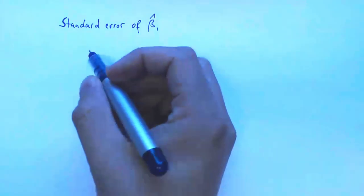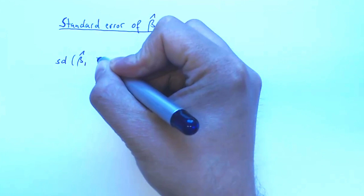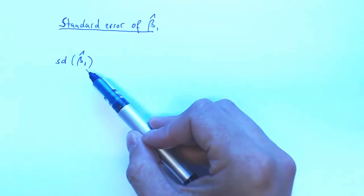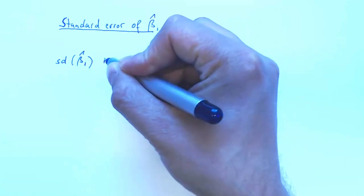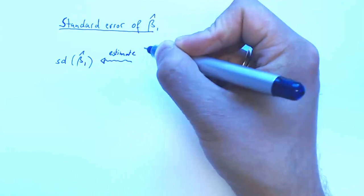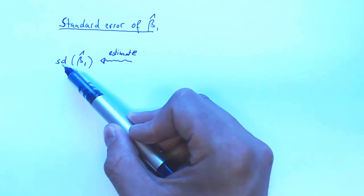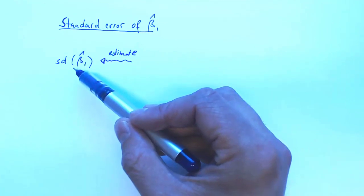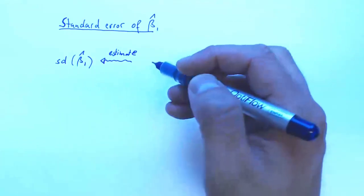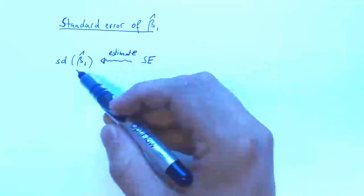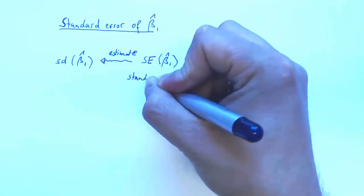Now we are going to talk about the standard error of beta 1 hat. Remember, we needed the standard deviation of beta 1 hat in our calculation, but the standard deviation is something we typically do not know. However, maybe we can estimate it. An estimator of the standard deviation is called a standard error, denoted se(beta 1 hat). This is just historical nomenclature — it's called a standard error rather than sd-hat.